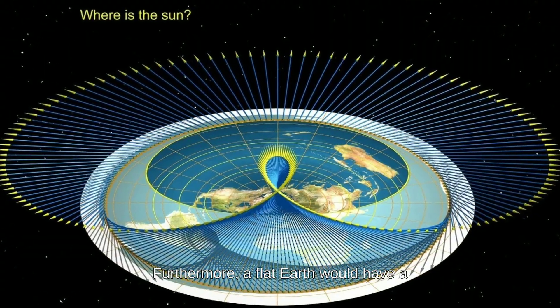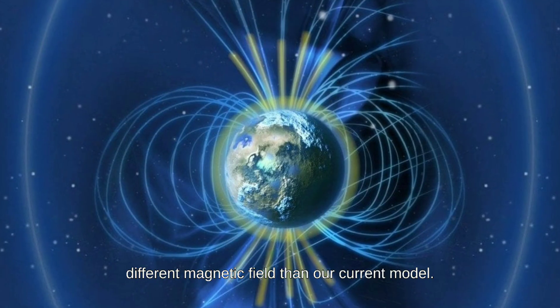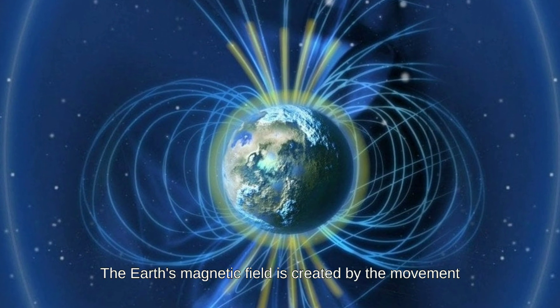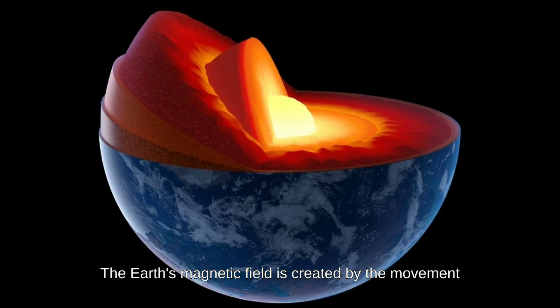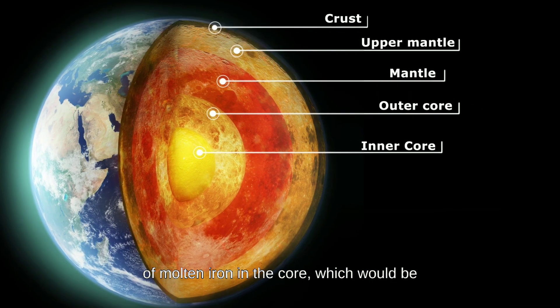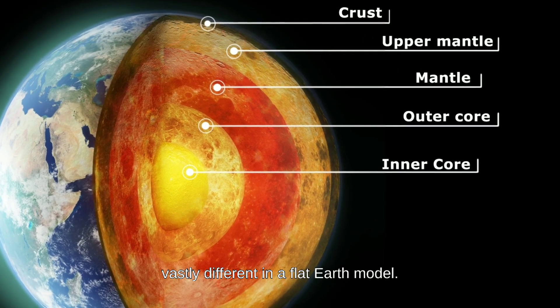Furthermore, a flat Earth would have a different magnetic field than our current model. The Earth's magnetic field is created by the movement of molten iron in the core, which would be vastly different in a flat Earth model.